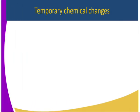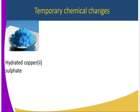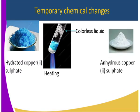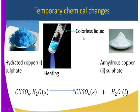Moving to change number two, we have temporary chemical change. Let's consider hydrated copper(II) sulfate. On heating, hydrated copper(II) sulfate changes its state to anhydrous copper(II) sulfate. During heating, as you can see from the diagram, we have a colorless liquid which forms on the cooler parts of the boiling tube. From the chemical equation: hydrated copper(II) sulfate, which is blue in color in solid state, when heated gives us anhydrous copper(II) sulfate plus the water of crystallization — and that water of crystallization is the colorless liquid which condenses on the cooler parts of the boiling tube.